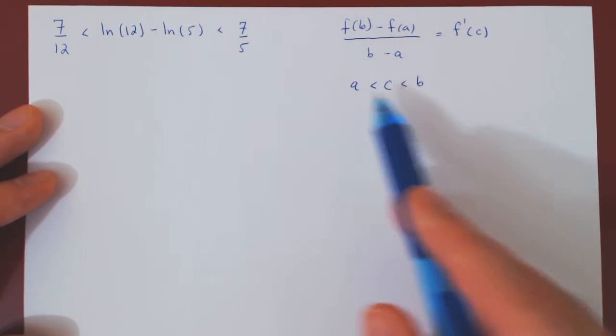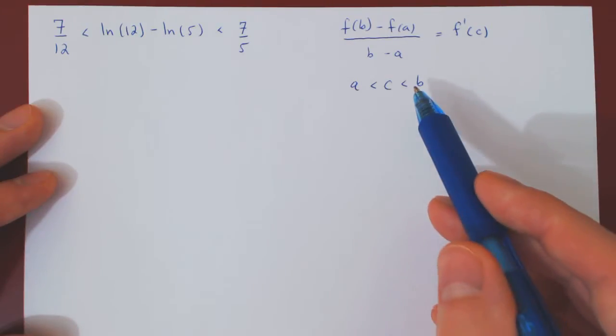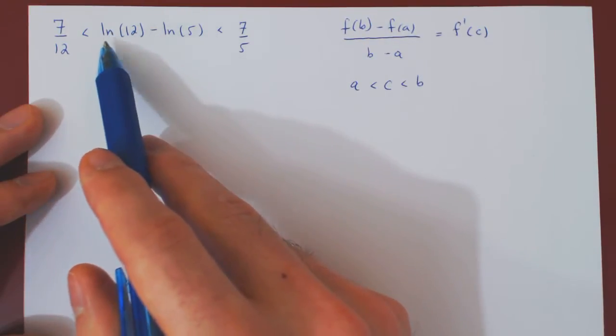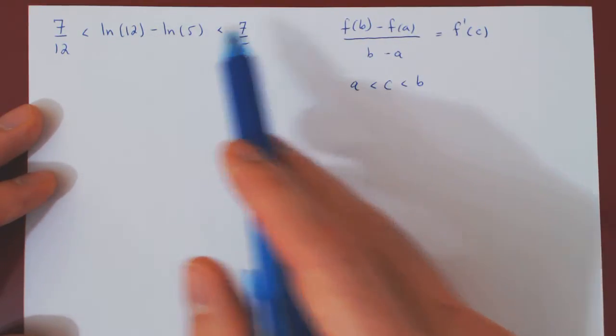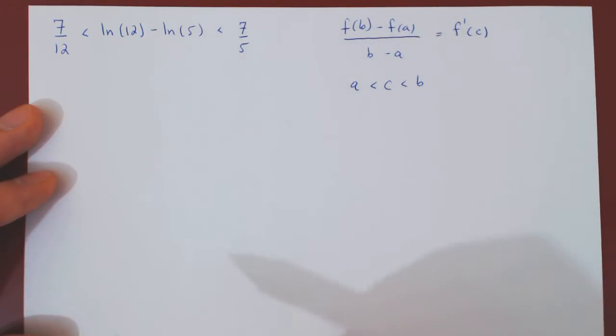So the only question is, if we're going to use the mean value theorem, what is the choice of a, the choice of b, and the choice of the function? Well, if we look here, we have ln of 12 minus ln of 5. This looks a whole lot like the numerator of the left-hand side of our equality.